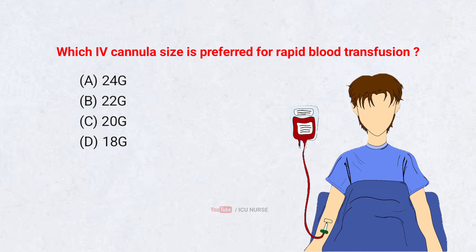Which IV cannula size is preferred for rapid blood transfusion? A. 24 gauge. B. 22 gauge. C. 20 gauge. D. 18 gauge. Correct answer: D. 18 gauge. A large-bore cannula like 18 gauge allows faster flow rates required during blood transfusion or fluid resuscitation.